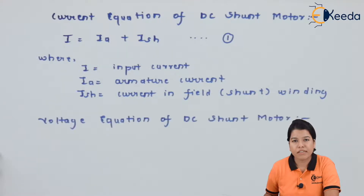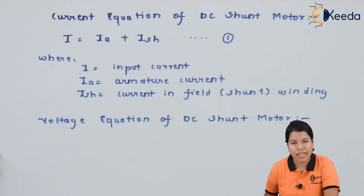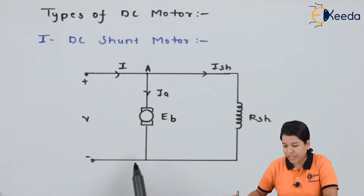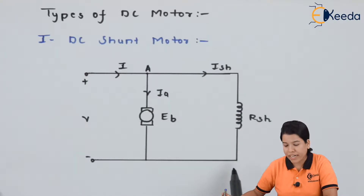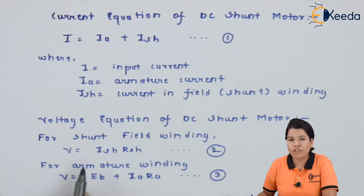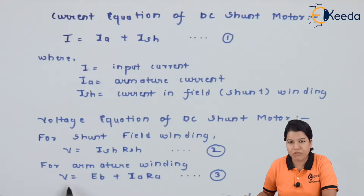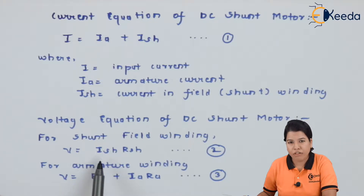Let us derive the equation for voltage. In case of DC shunt motor, there are two windings: armature winding and field winding, connected in parallel. We write a separate equation for each. For the armature winding: V = Eb + Ia × Ra. For the field winding: V = Ish × Rsh. Here, Ish is the current in field winding, Rsh is the resistance of field winding, Eb is the back EMF, Ia is the armature current, and Ra is the armature resistance.